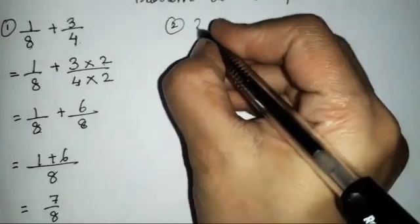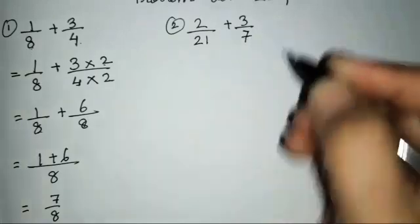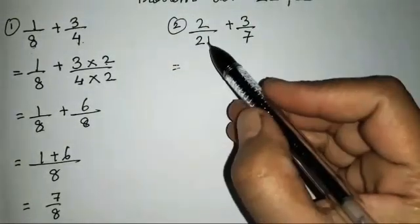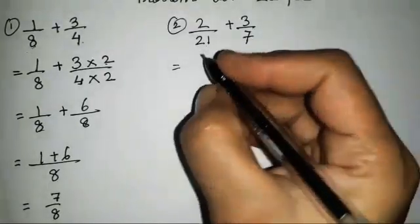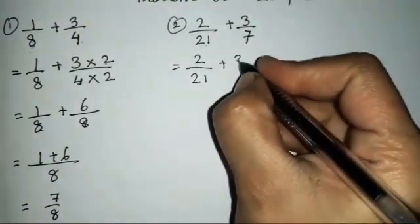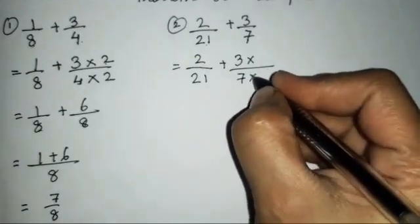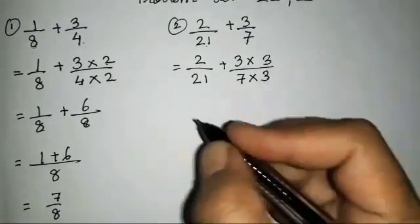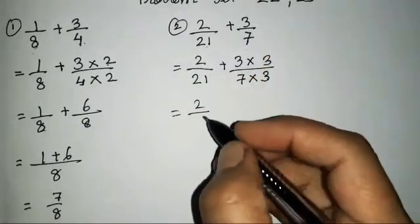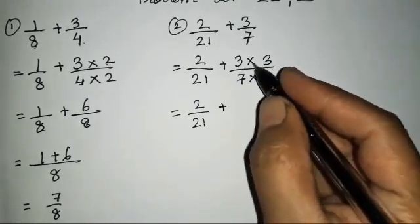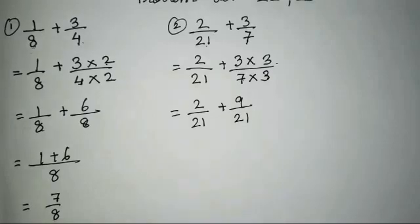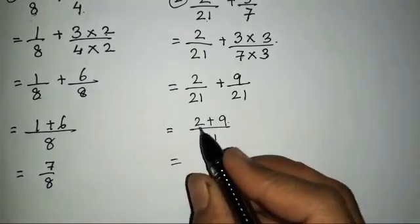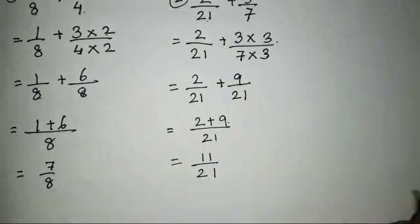The second sum is 2/21 plus 3/7. In 21's table, 7 will not come, but in 7's table, 21 will come. So we keep 2/21 as it is. We multiply 3/7 by 3/3 to get 9/21. So 2/21 plus 9/21 gives us 11/21.